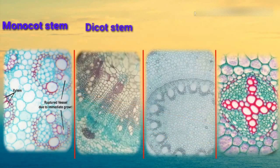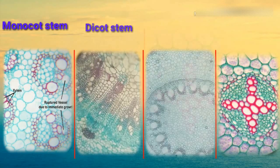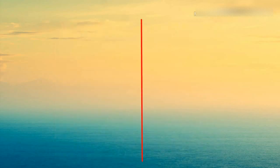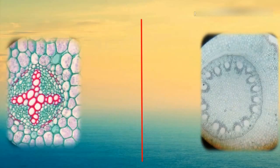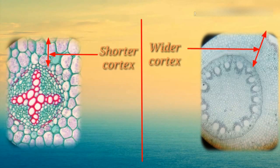Now from the remaining two, we will identify dicot root and monocot root. Generally, both of these look similar, but there are some major differences between them. We will distinguish them parallelly. Cortex is small in dicot root, whereas cortex is much wider in monocot root.